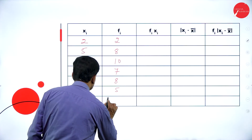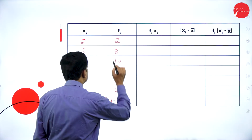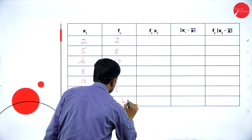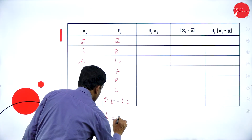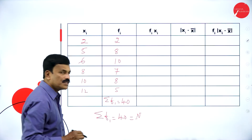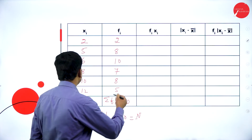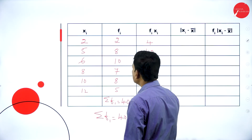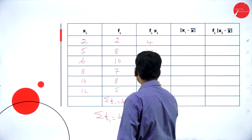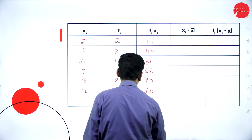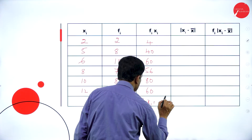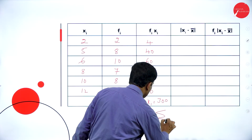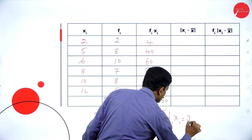Adding sigma fi: 2 plus 8 is 10, plus 10 is 20, plus 7 is 27, plus 13 is 40. So sigma fi equals 40, which is n. Now multiply fi and xi: 2 into 2 is 4, 8 into 5 is 40, 6 into 10 is 60, 8 into 7 is 56, 10 into 8 is 80, 12 fives are 60. Adding these gives sigma fi*xi equal to 300.